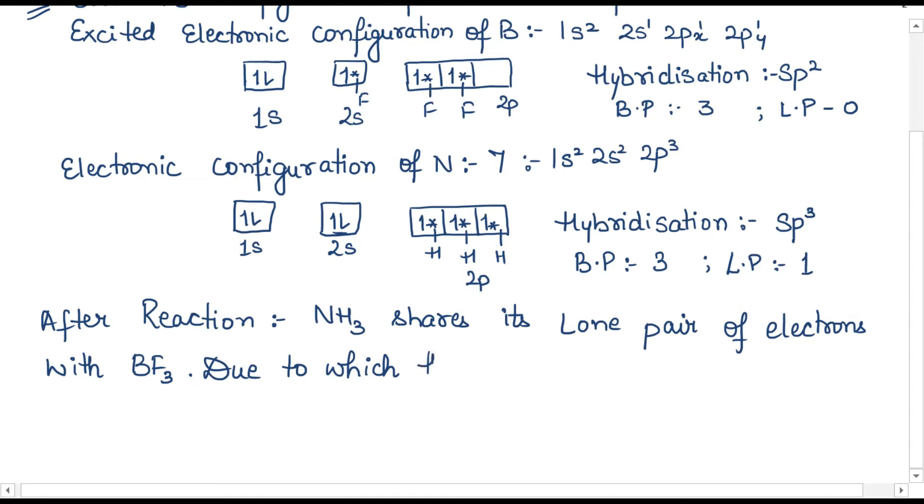Hybridization of BF3 becomes sp3, but there is no change of hybridization of ammonia. Ammonia has no difference because the coordinate bond means that the lone-pair of electron belongs to one species but is shared by two species.